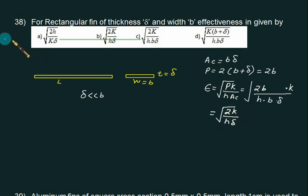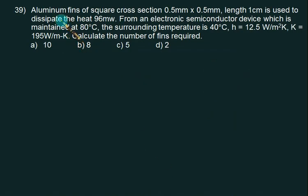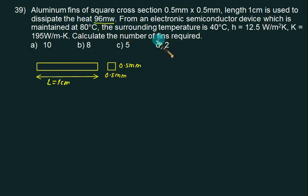We are given an aluminum fin of square cross-section, 0.5mm by 0.5mm, so width is 0.5 and thickness is also 0.5. Length is 1cm, used to dissipate heat of 96 milliwatts from an electronic semiconductor device which is maintained at 80 degrees Celsius.